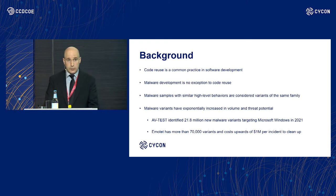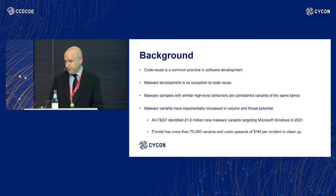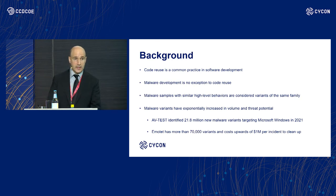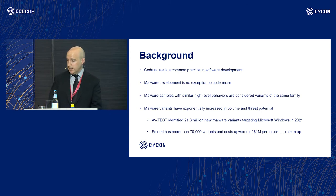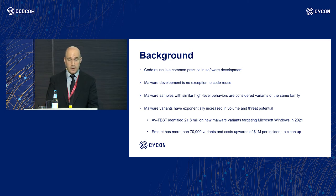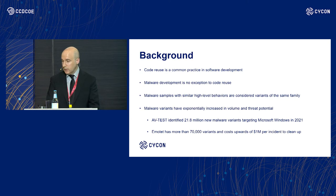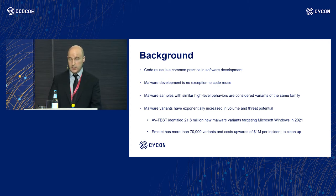Malware authors don't want to start their development process from scratch — they want to reuse as much code as possible. Malware samples which have similar high-level behaviours are considered variants of the same family. Over the years, malware variants have exponentially increased, both in terms of volume and threat potential. The AV Test Institute identified in 2021 more than 21 million new malware variants targeting the Microsoft Windows operating system. The Emotet malware now has more than 70,000 variants, and each Emotet malware incident can cost up to 1 million to clean up.